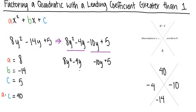8y squared and negative 4y have a common factor of 4y, so we can rewrite this as 4y times 2y minus 1.